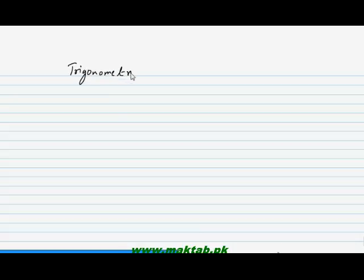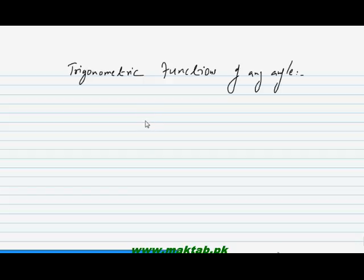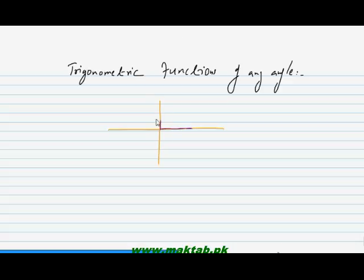Now we are going to see what the trigonometric functions of any angle are. Let's take an XY coordinate system. Let's suppose we take some angle. Here we have the XY axis. We take one arc along the positive x-axis, then we take a second arc in the first quadrant. Let's suppose this is the second arc and this is the first arc. Now we take angle theta.